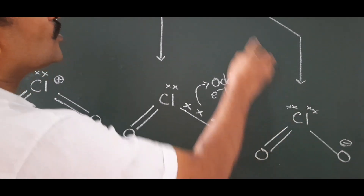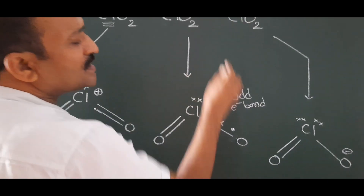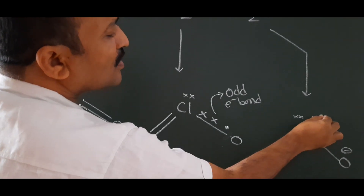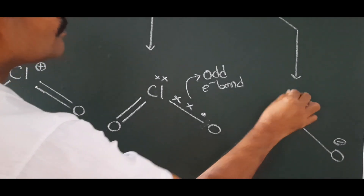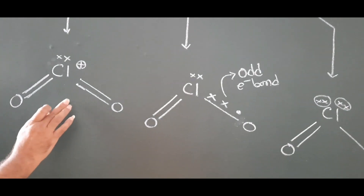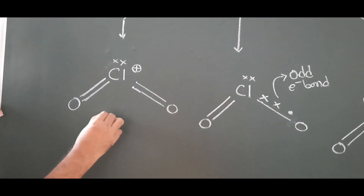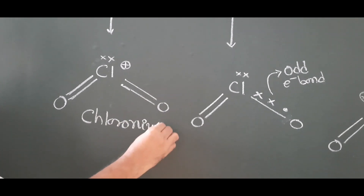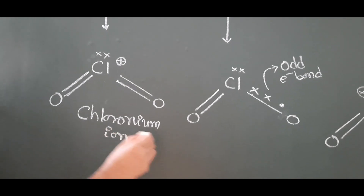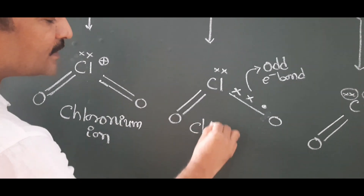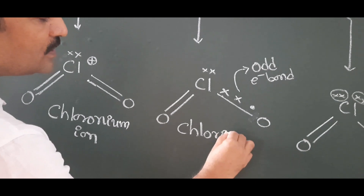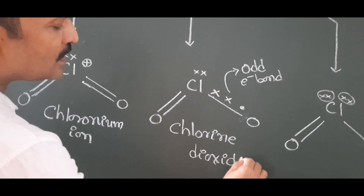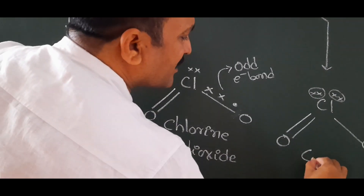In ClO₂⁻, chlorine has seven valence electrons; two are involved in bonding and one more electron is involved, leaving two more pairs. This is the chloronium ion, ClO₂ is chlorine dioxide, and ClO₂⁻ is called the chlorite ion.